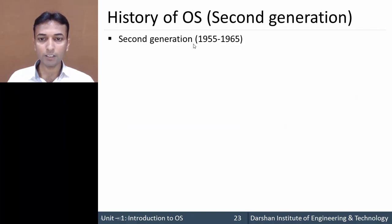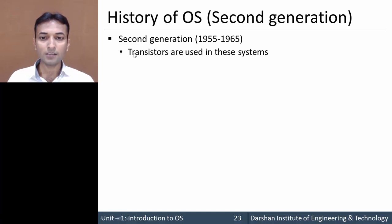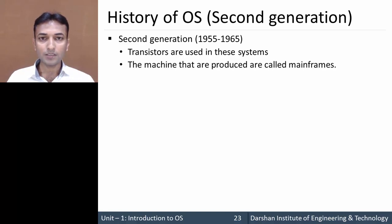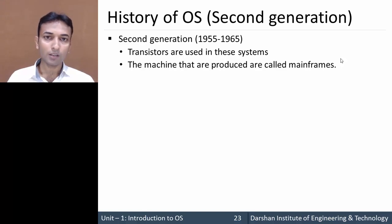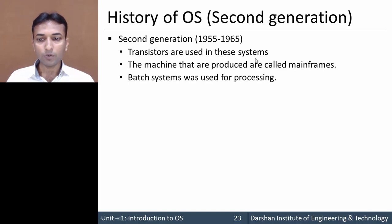Next, second generation, that is from 1955 to 1965. In the second generation, transistors were used to develop systems, and the machine developed during this generation is known as the mainframe computer. The mainframe computer is a large, room-size computer used by corporate companies for tasks such as processing large amounts of data.